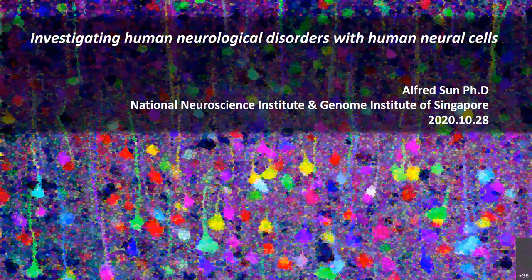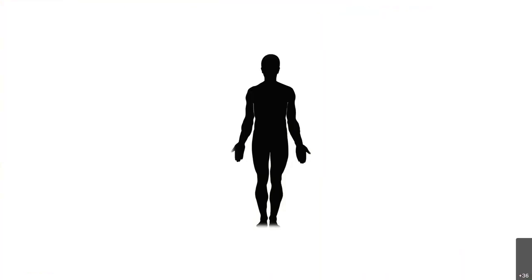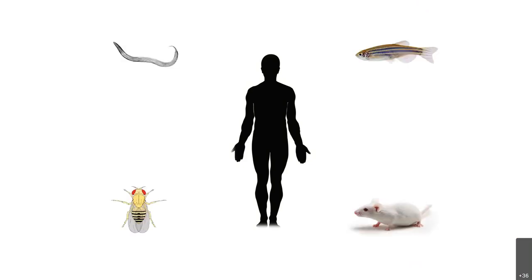The title of my talk today is investigating human neurological disorders with human neural cells. I'm primarily interested in understanding human neurological disease, and the reason is really not withstanding the kind of knowledge and insight we learn from all organisms used in laboratory studies. I want to remind everybody that there's a vast difference between human systems versus all the animals we use in the lab.